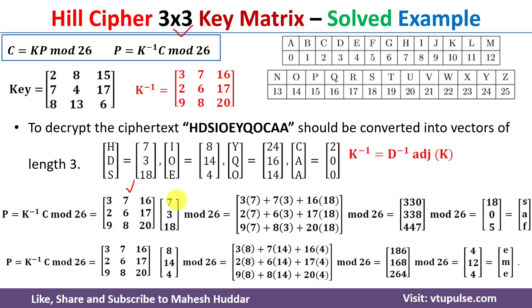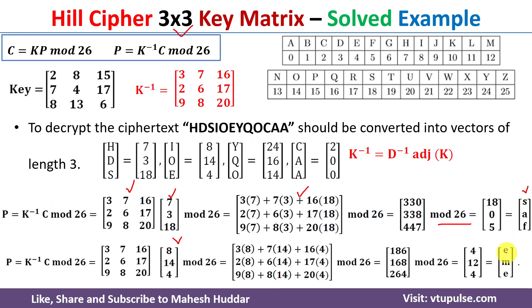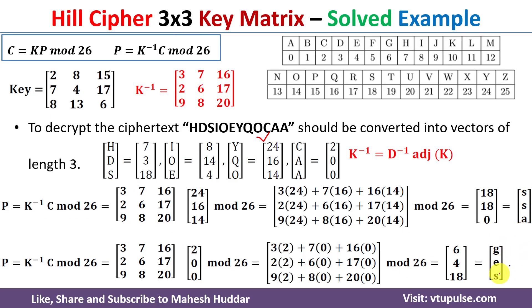For decryption, we compute P = K⁻¹·C mod 26 for each vector. Multiplying K⁻¹ by the first ciphertext vector [7, 3, 18] and taking mod 26 gives [18, 0, 5], which is S, A, F. Similarly, the second vector decrypts to E, M, E; the third to S, S, A; and the fourth to G, E, S. Combining these gives 'safe messages' — the original plain text is recovered.